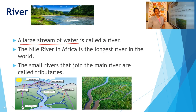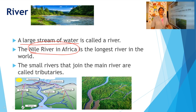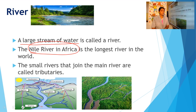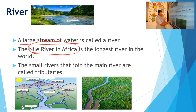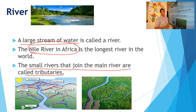Do you know which is the longest river in the world? It is the Nile River in Africa. Rainwater and snow melted from high mountains form small streams. These small streams flow down the slopes, and when they join together they form a bigger stream called a river. These small rivers that join the main river are called tributaries.